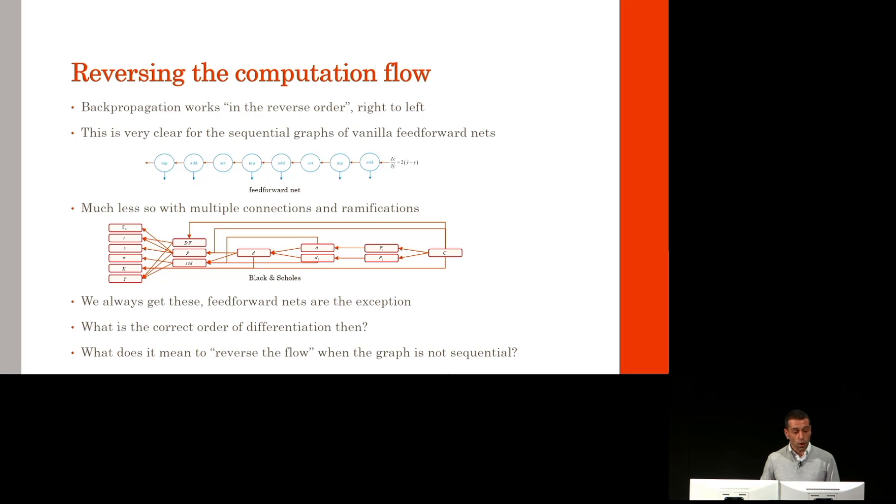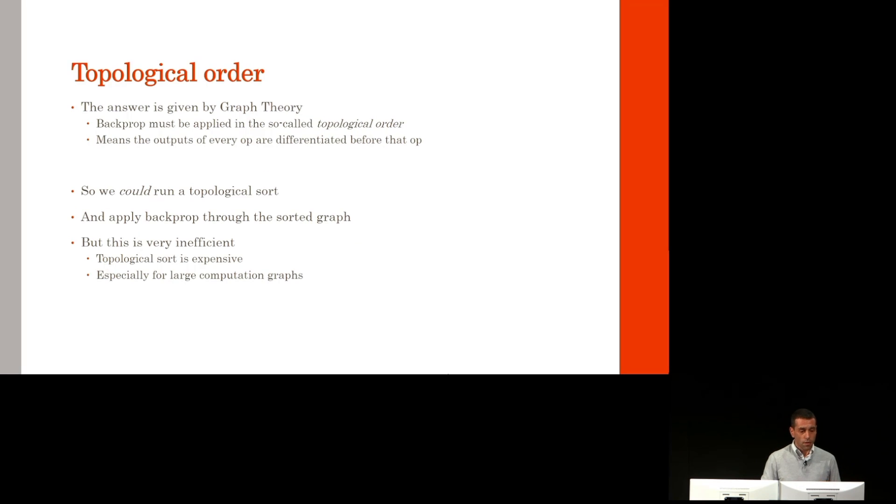In order to apply backpropagation, we need to reverse the computation flow. This is very clear for the sequential graphs of vanilla feedforward networks. But it's less clear when we have a lot of different connections and ramifications. Look at the graph of Black-Scholes. Black-Scholes is the simplest calculation you will ever write, and yet we have all these connections all over the place. So it's really unclear what it means to calculate the adjoint equations right to left. What does it mean to reverse the flow exactly? And in what order should we calculate these adjoint equations? The answer is given by graph theory. Differentiation must be applied in the so-called topological order. That just means that the output of every op must be differentiated before that op.